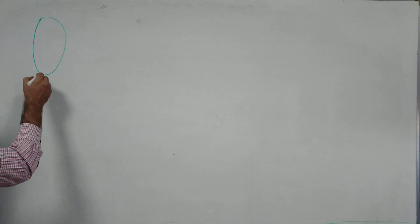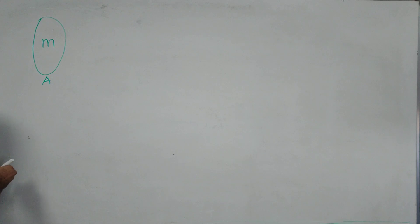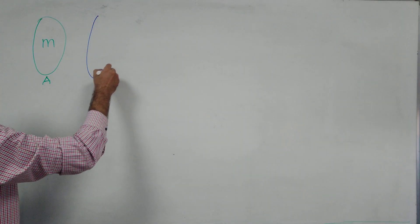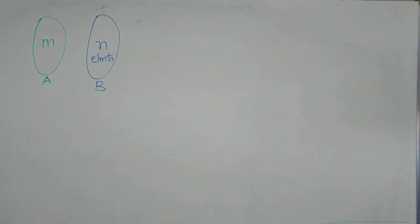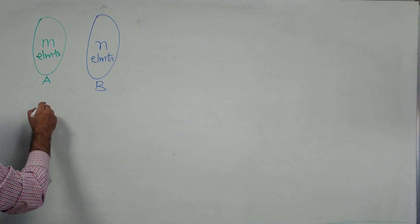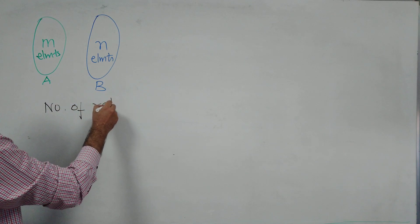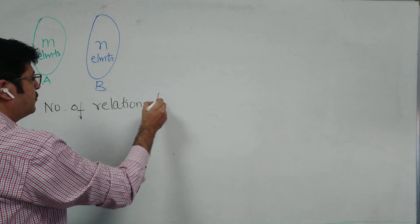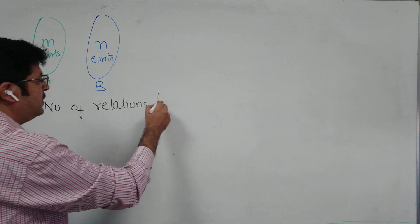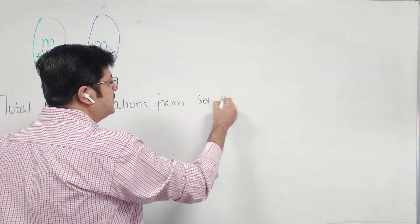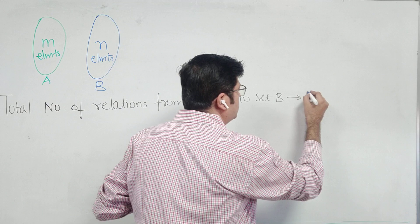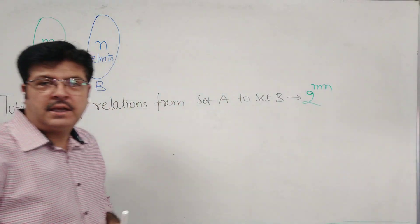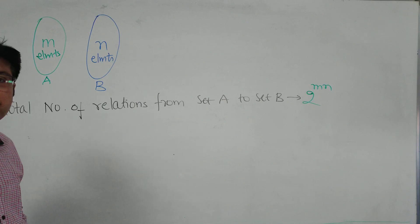Consider set A having M elements and set B having N elements. The total number of relations from set A to set B is 2 raised to the power M into N. This is nothing but the number of subsets — number of subsets equals number of relations.